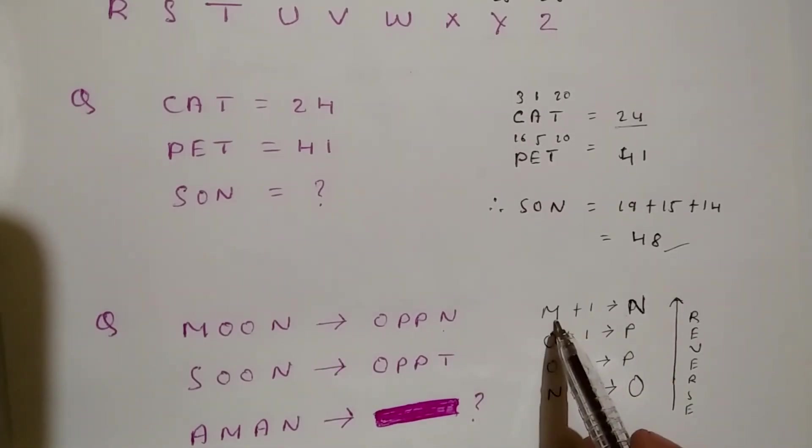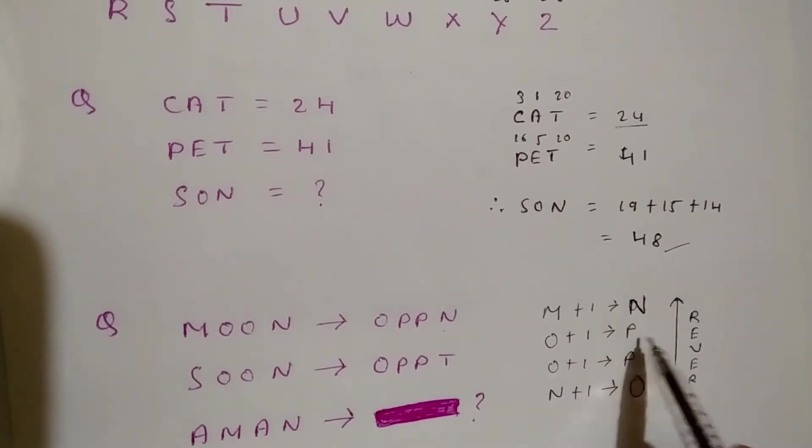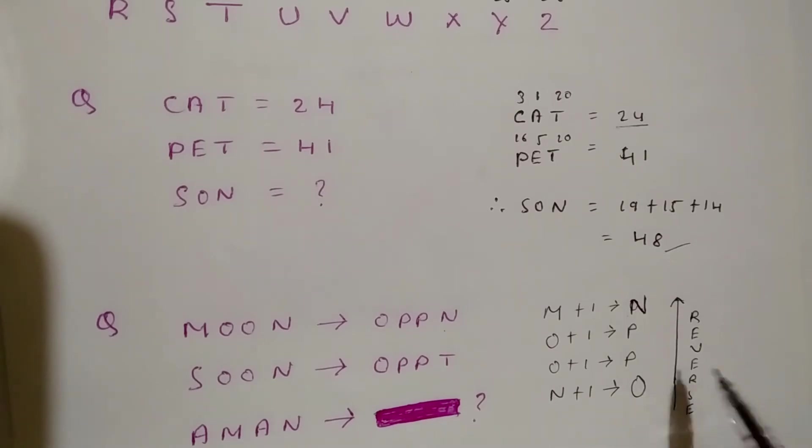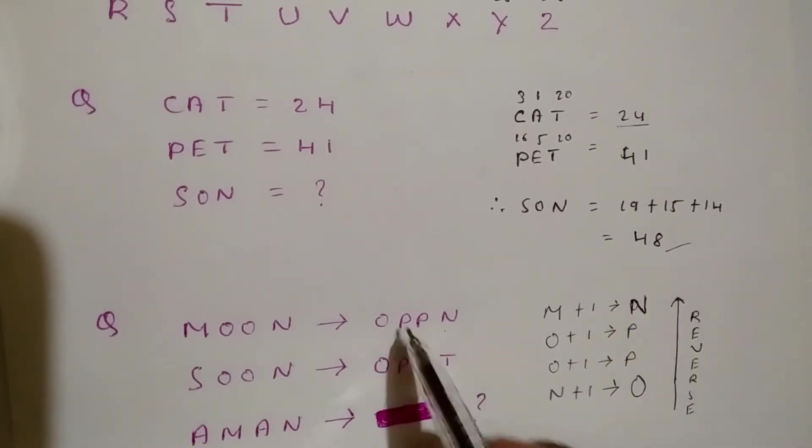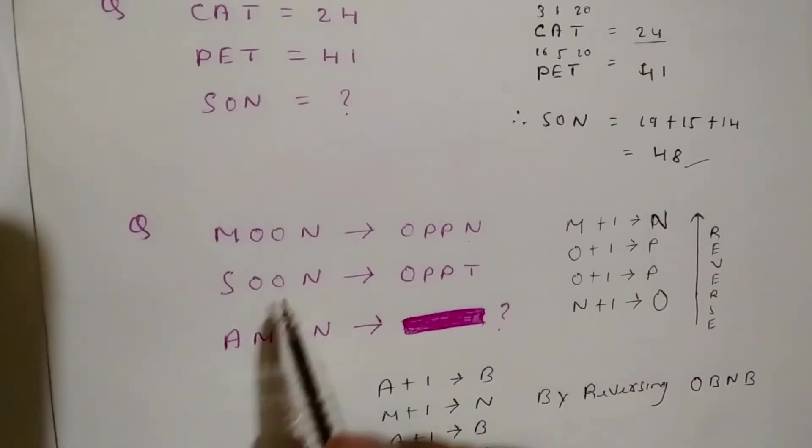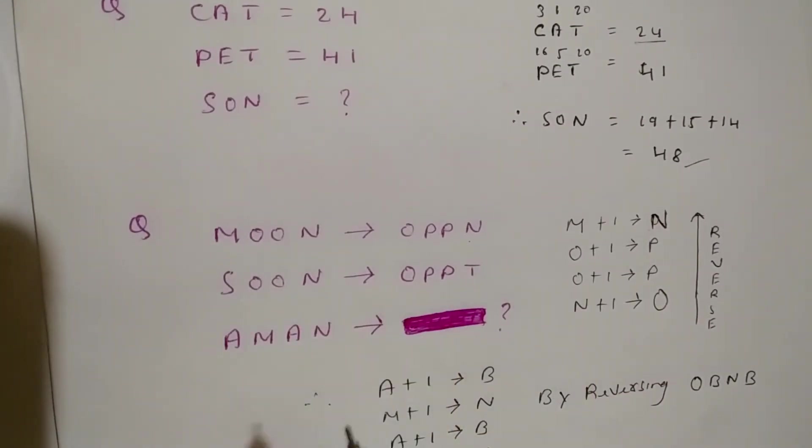Understand, think very calmly. First we increase the number by 1. What comes after M? N. What comes after O? P. Then reverse it: OPPN. In the similar way we can do for SOON. Then we can find the trick and apply it for AMUN.